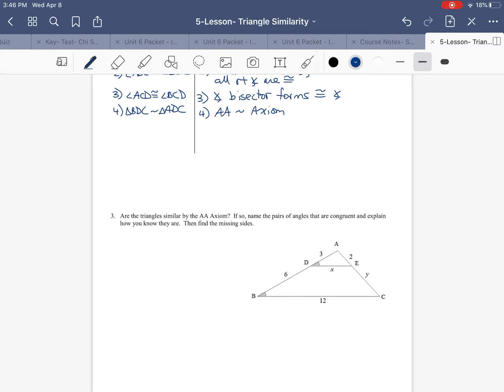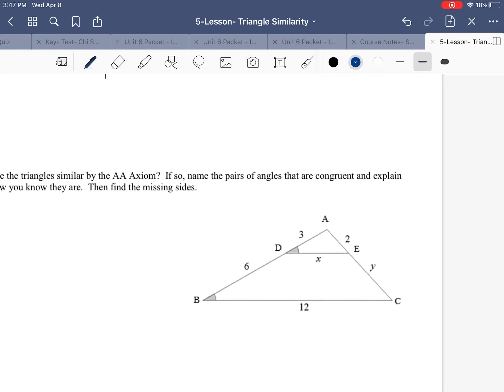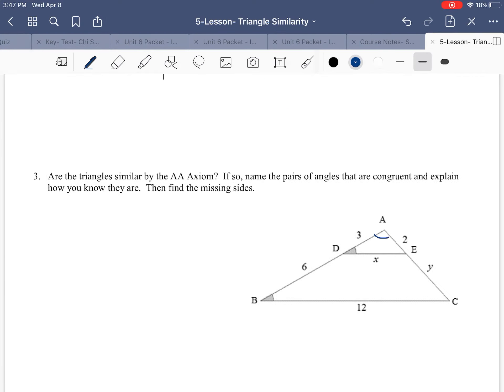All right, last but not least, are the triangles similar by the AA axiom? If so, name the pair of angles that are congruent, explain how you know they are, then find the missing angles. All right, so, by the angle-angle axiom.